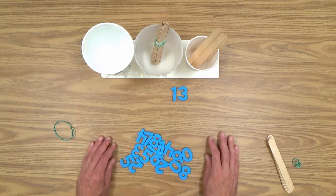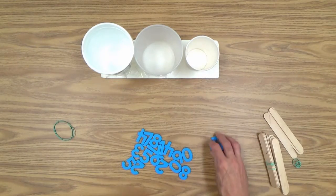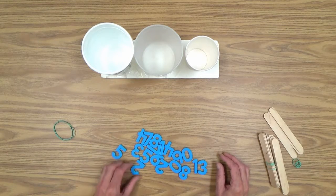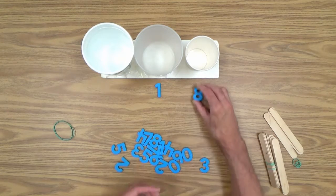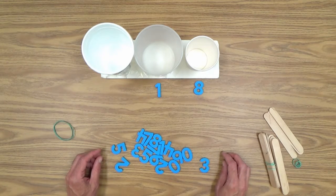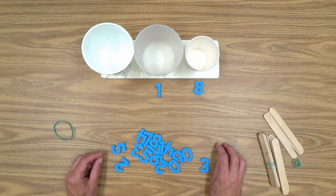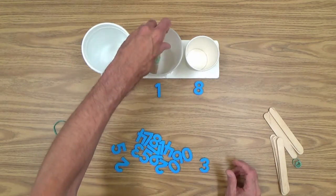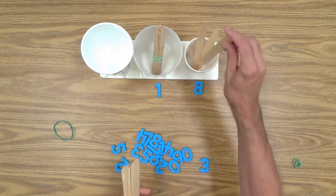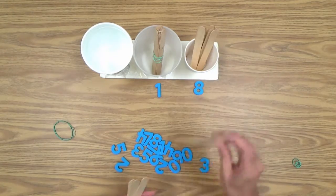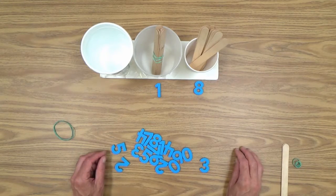Or you could reverse the activity. So let's take all of these out and start with the numerals. Let's say you put a one there and let's use an eight. And you tell your child, okay, we're going to do it backwards. Now, can you put in the craft sticks that the numerals are telling you to put in there? And hopefully he'll go, oh yeah, that's one bundle of 10s. And one, two, three, four, five, six, seven, eight single craft sticks.